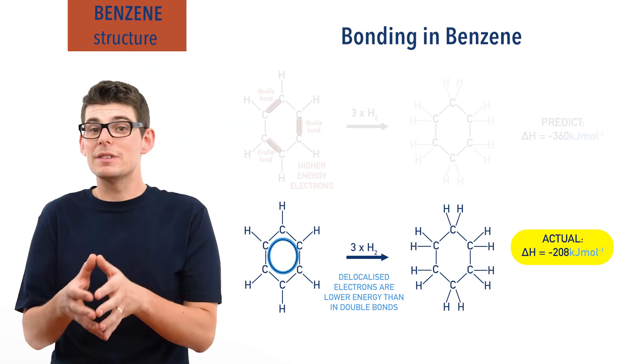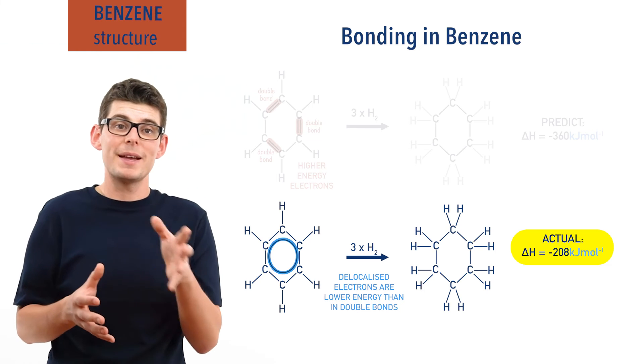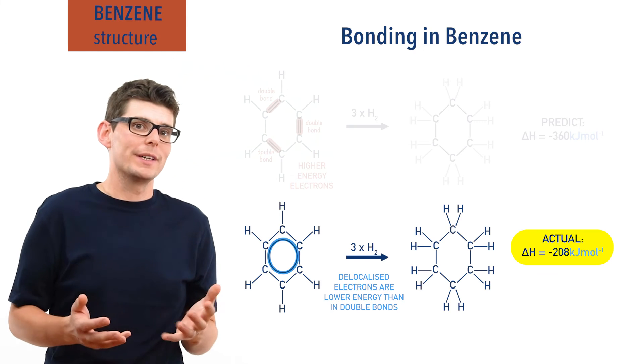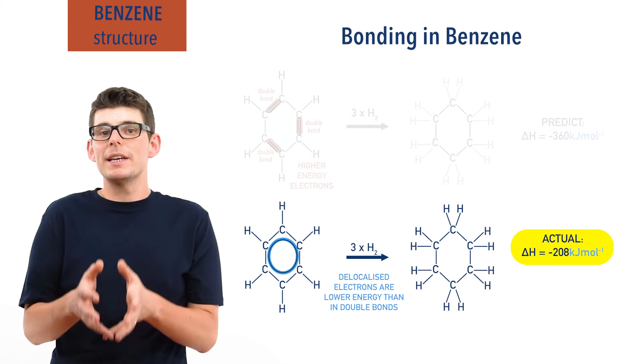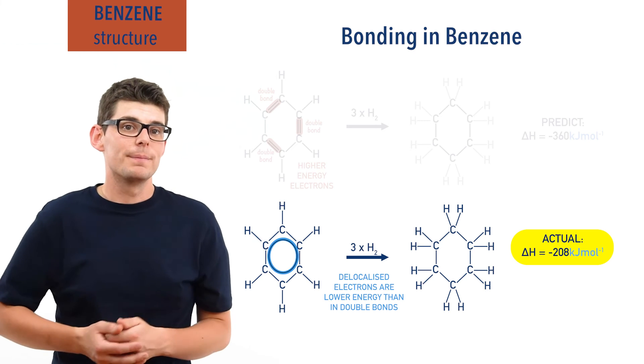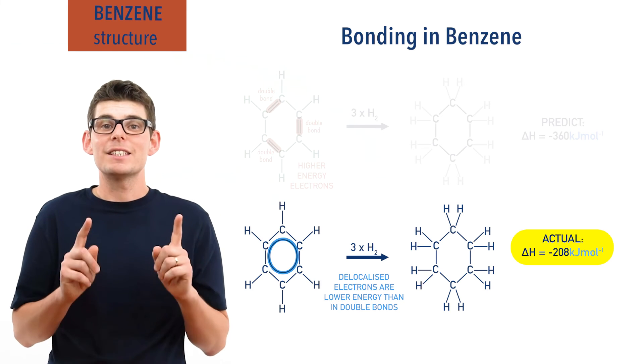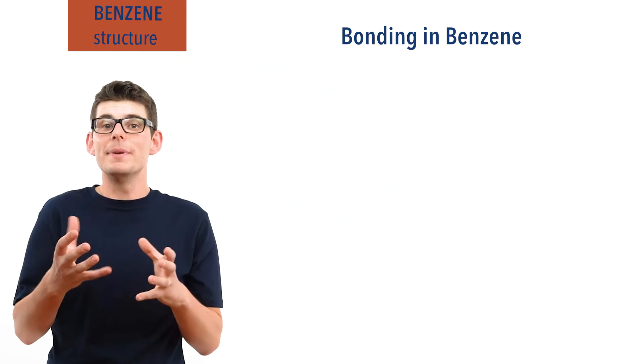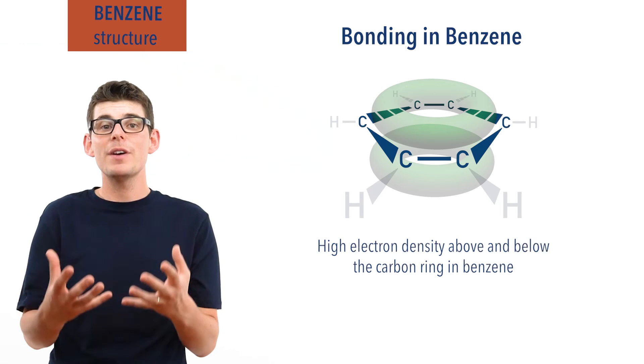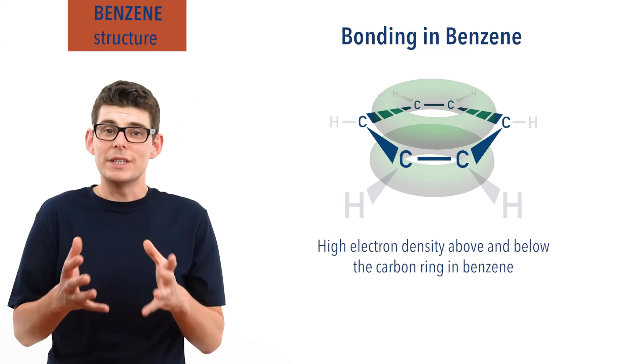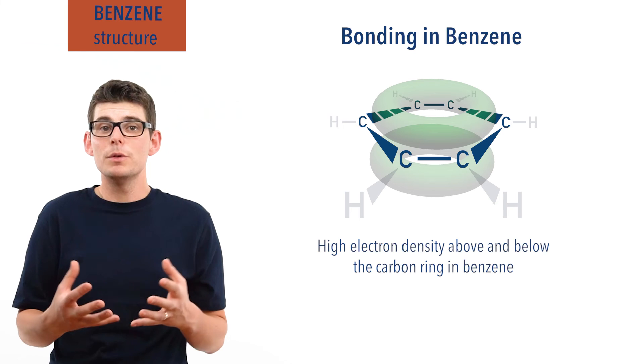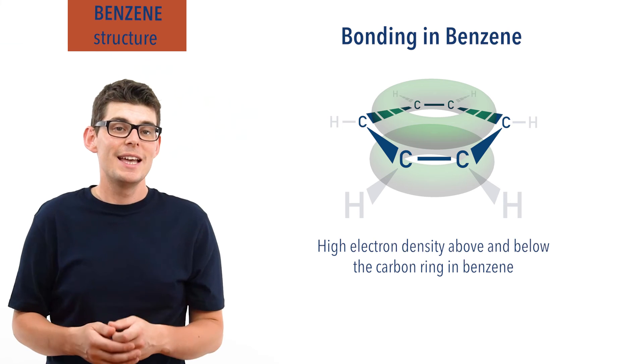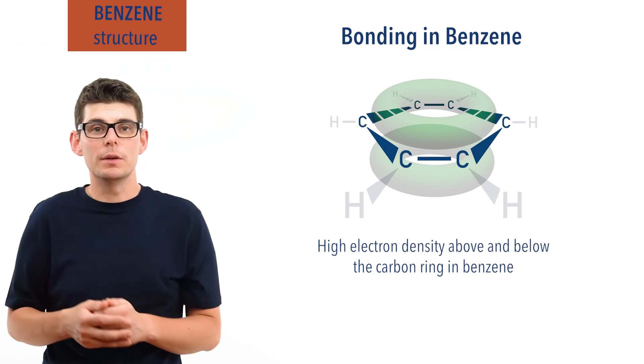This would explain the relative differences in the enthalpies of hydrogenation for benzene and the Kekulé structure of benzene, or cyclohexa-1,3,5-triene. It would also explain why all carbon bond lengths in benzene are the same. And it would explain how benzene reacts. These delocalized electron rings mean there is a high electron density above and below the carbon ring. The delocalized electron rings are exposed, meaning the benzene is vulnerable to electrophiles and electrophilic attack, explaining why benzene reacts with electrophiles.